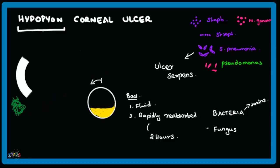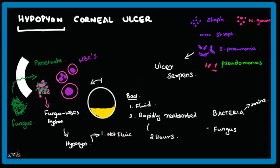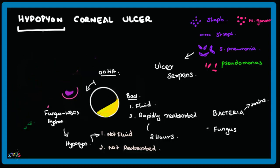However, in case of a fungal infection, the fungus can penetrate the cornea and combines with the WBCs. The WBCs adhere into the meshwork of the fungi, and this hypopion is not fluid and cannot be reabsorbed. So when the head is tilted, this hypopion does not flow down and form a horizontal line — it retains its shape even after tilting.